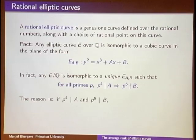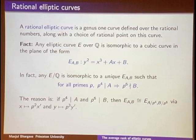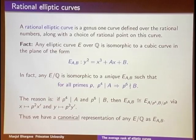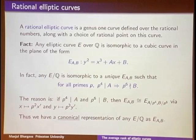The reason for this minimality condition is that if p⁴ divides a and p⁶ divides b, then E(a,b) is isomorphic to E(a/p⁴, b/p⁶), because you can replace x by p²x' and y by p³y'. Expressing the equation in terms of x' and y', a p⁴ disappears from a and a p⁶ disappears from b. So every elliptic curve over Q has a canonical representation y² = x³ + ax + b satisfying this minimality property at every prime.